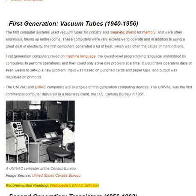First generation computers relied on machine language — the lowest level programming language understood by computers — to perform operations, and they could only solve one problem at a time. It would take operators days or even weeks to set up a new problem. Input was based on punch cards and paper tape, and output was displayed on printouts. The UNIVAC and ENIAC computers are examples of first generation computing devices.